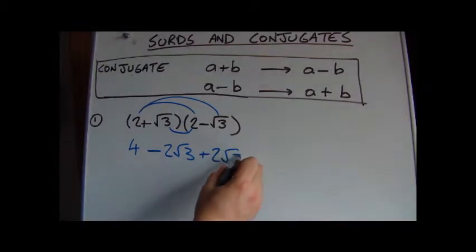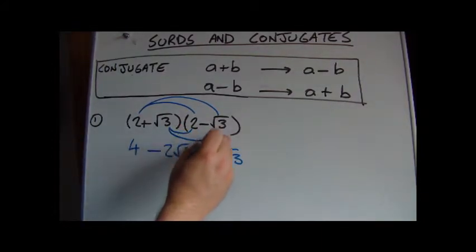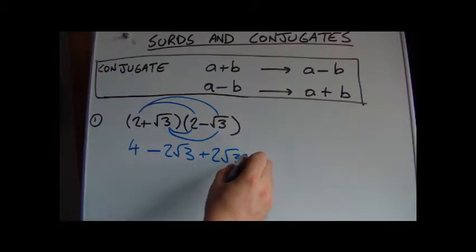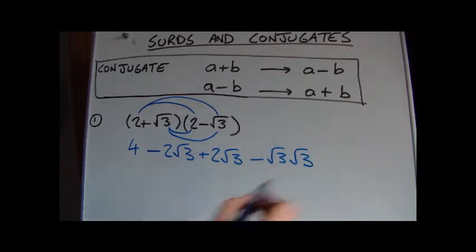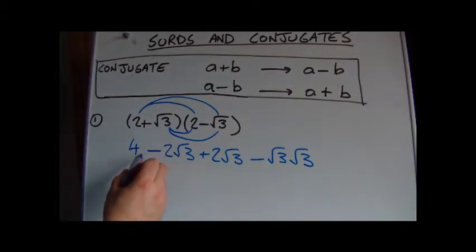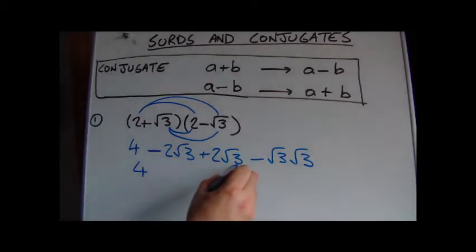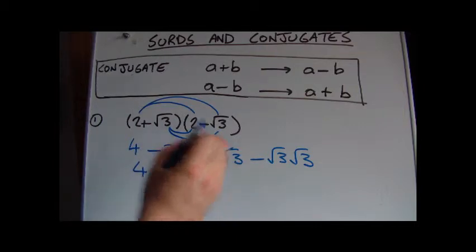If we multiply these two together, we'll get plus 2 root 3 and if we take those two together, we'll get minus root 3 times root 3. We can simplify this a little more. We've got 4, this term and this term will cancel each other. We've got minus 2 plus 2. So we'll get rid of those.